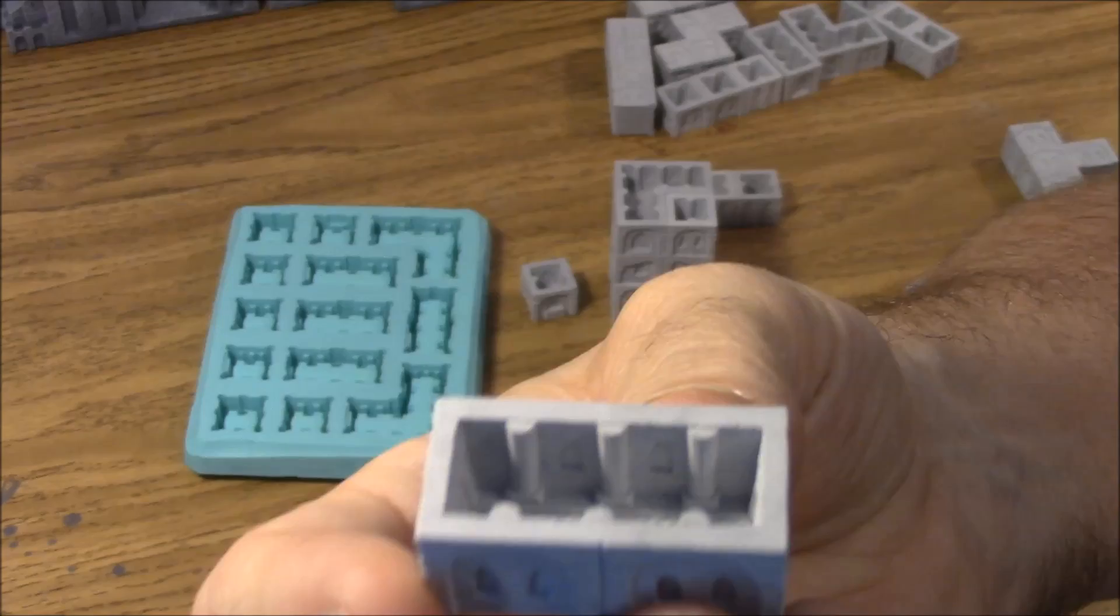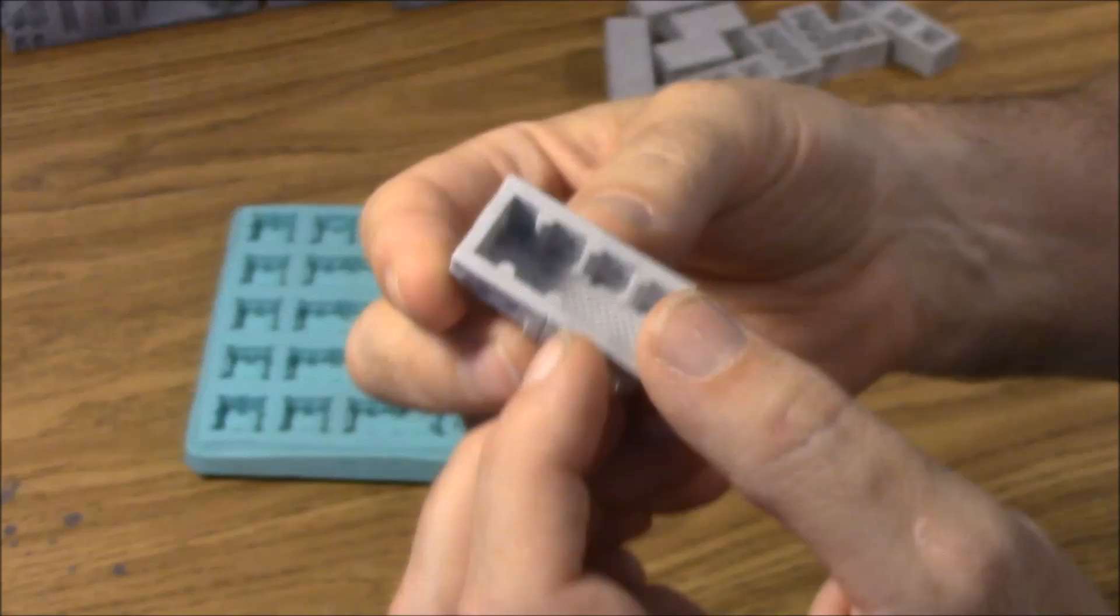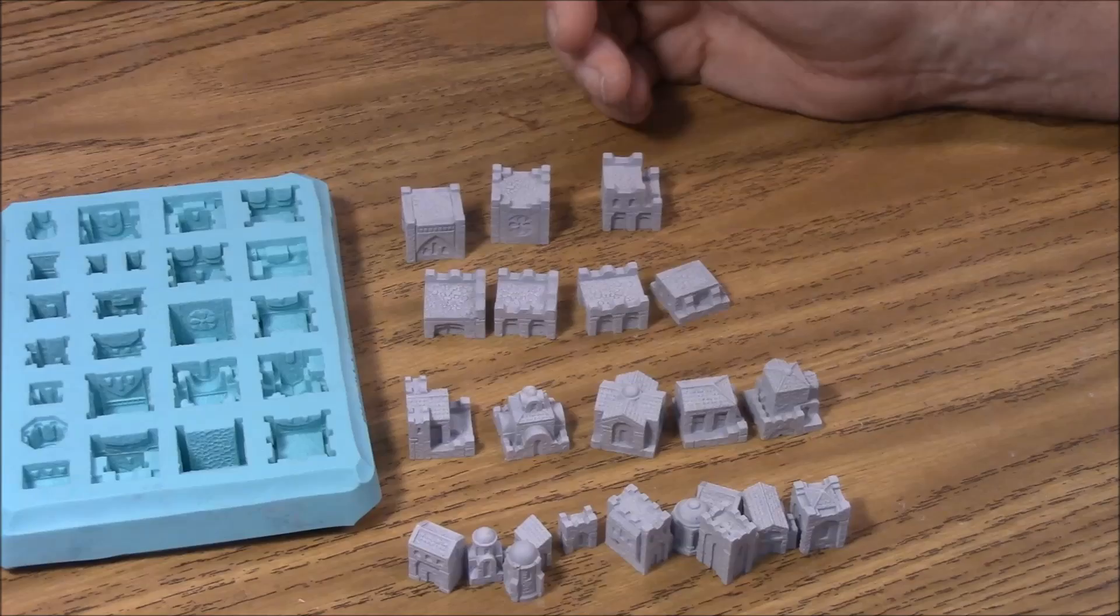These blocks actually have good details on the inside too. You can actually see that there are pillars here and there's actually kind of a stone design underneath. And if you wanted to make ruins, you could actually take a pair of pliers and break these apart and actually create a ruined building that you can kind of see the interior from if you wanted.